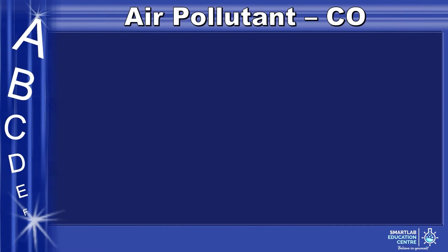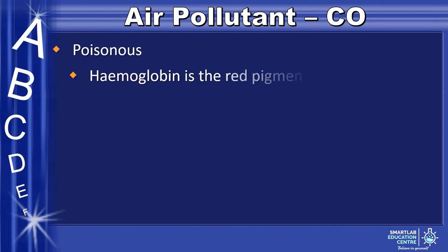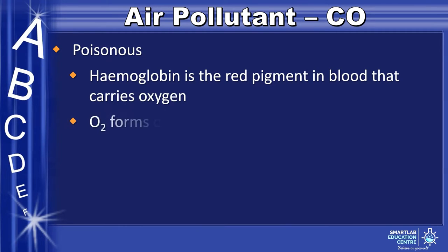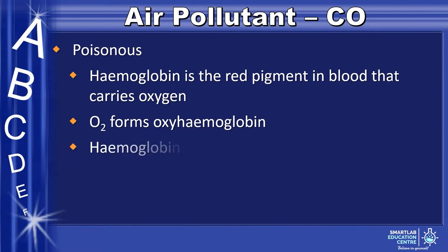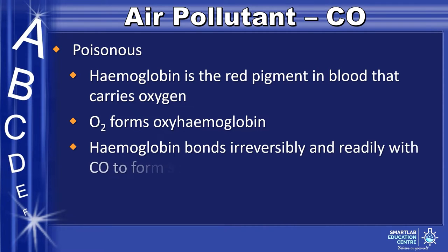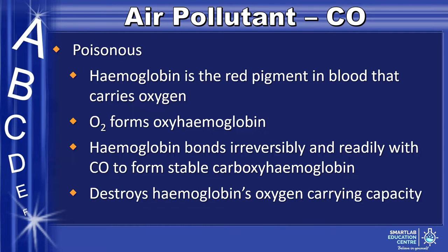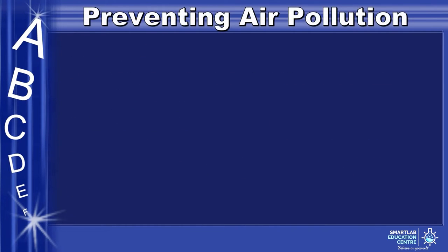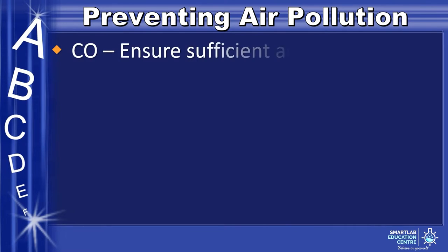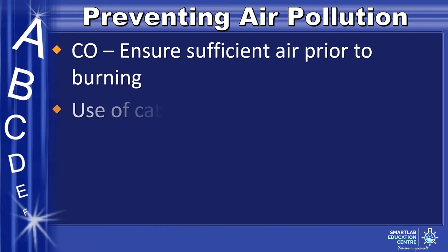An example of an air pollutant is carbon monoxide, which is poisonous. Hemoglobin is the red pigment in blood that carries oxygen and when combined with oxygen, forms oxyhemoglobin. Hemoglobin bonds irreversibly with carbon monoxide to form stable carboxyhemoglobin, which destroys hemoglobin's oxygen-carrying capacity. To prevent this air pollution, we need to ensure there is sufficient air prior to burning and also use a catalytic converter.